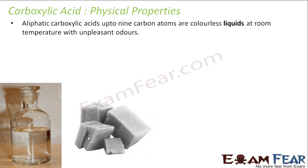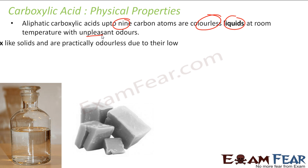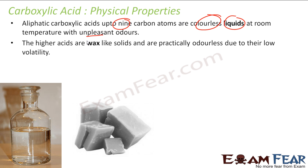The aliphatic carboxylic acids up to 9 carbons are generally colorless liquids at room temperature and they have a very bad smell. For 9 carbons and above, they are wax-like structures and they do not have any smell.